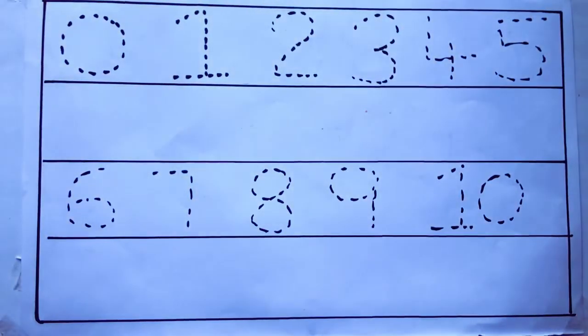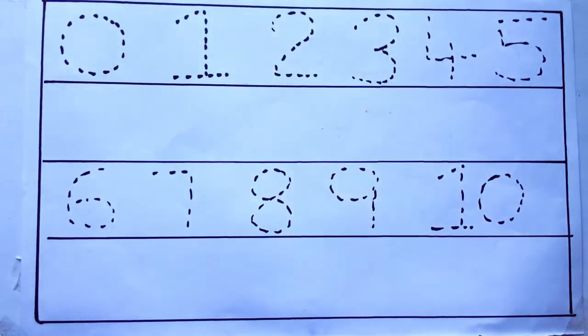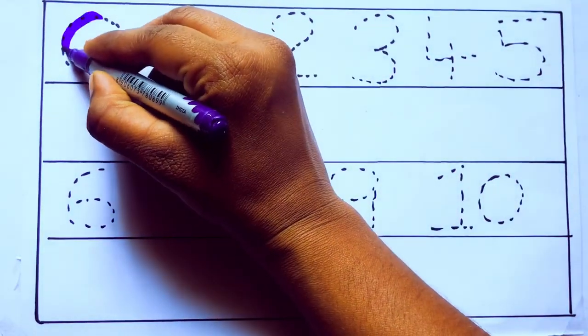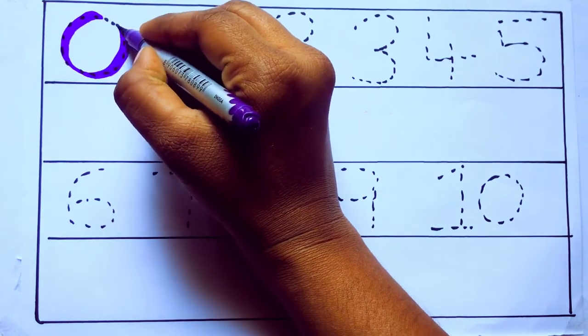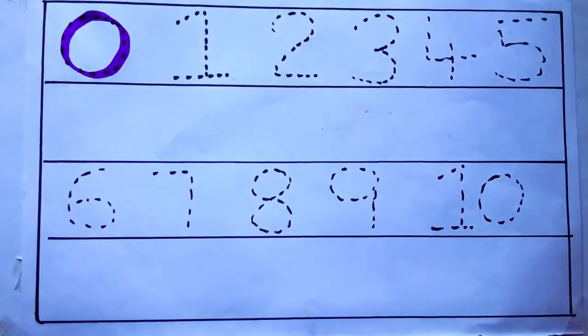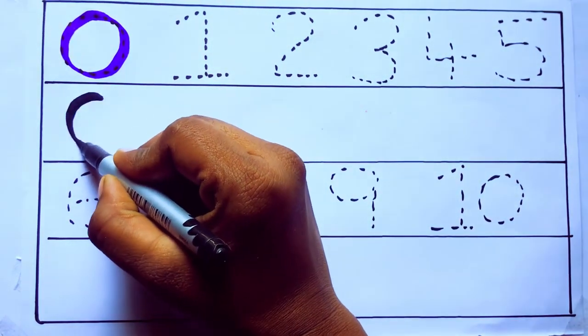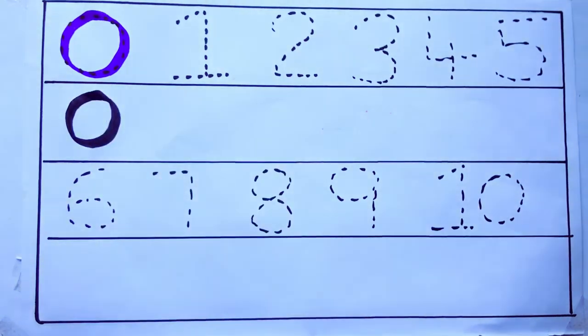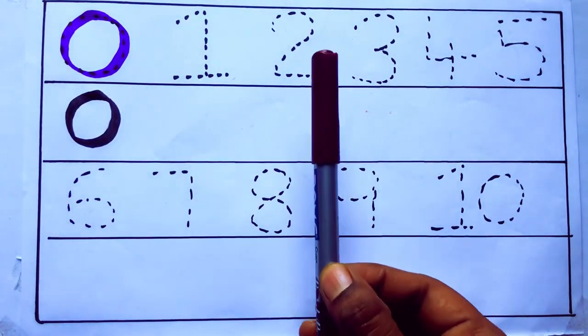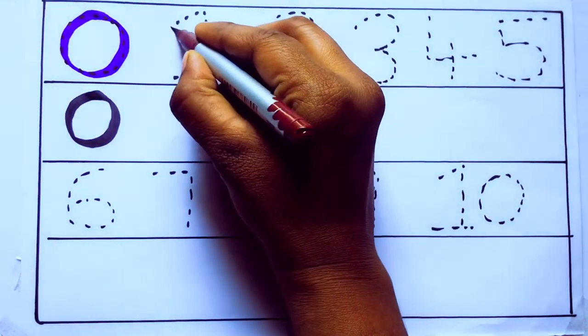Let's draw numbers. Violet color 0. Z-E-R-O. Violet color 0.